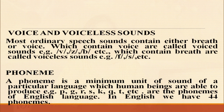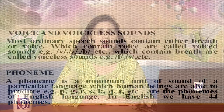Now, phoneme. A phoneme is a minimum unit of sound of a particular language which human beings are able to produce — that is, P, G, R, S, K, Q, T, etc. are the phonemes of English. In English, we have 44 phonemes.